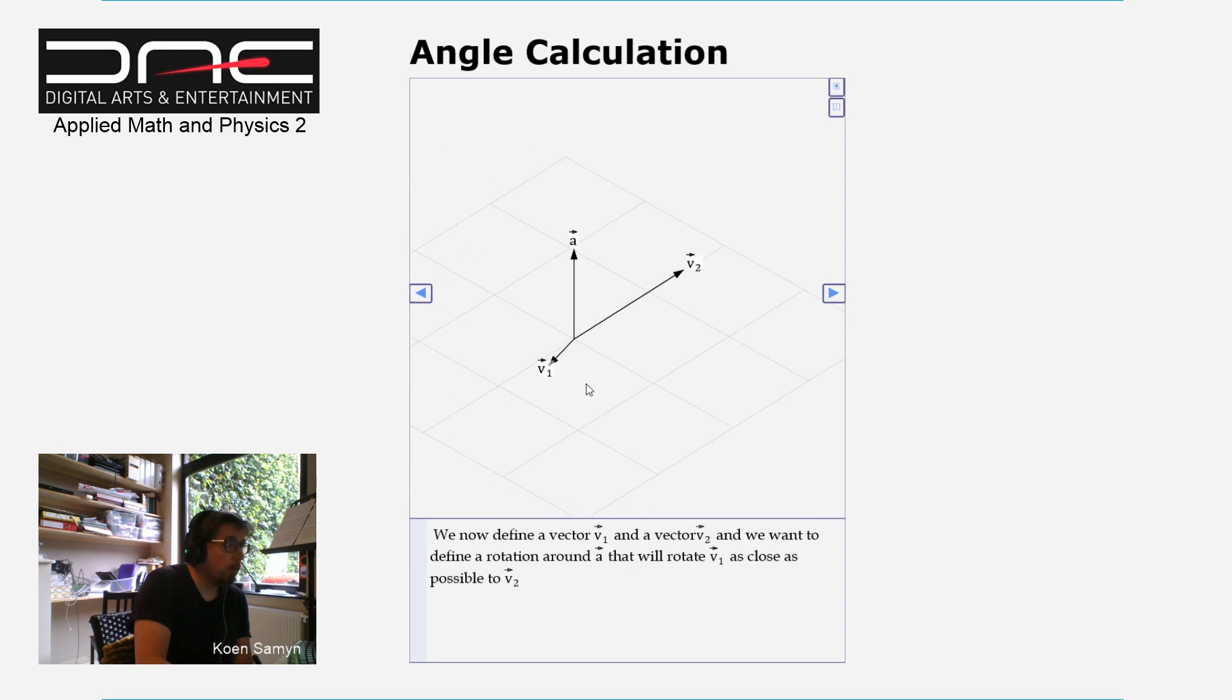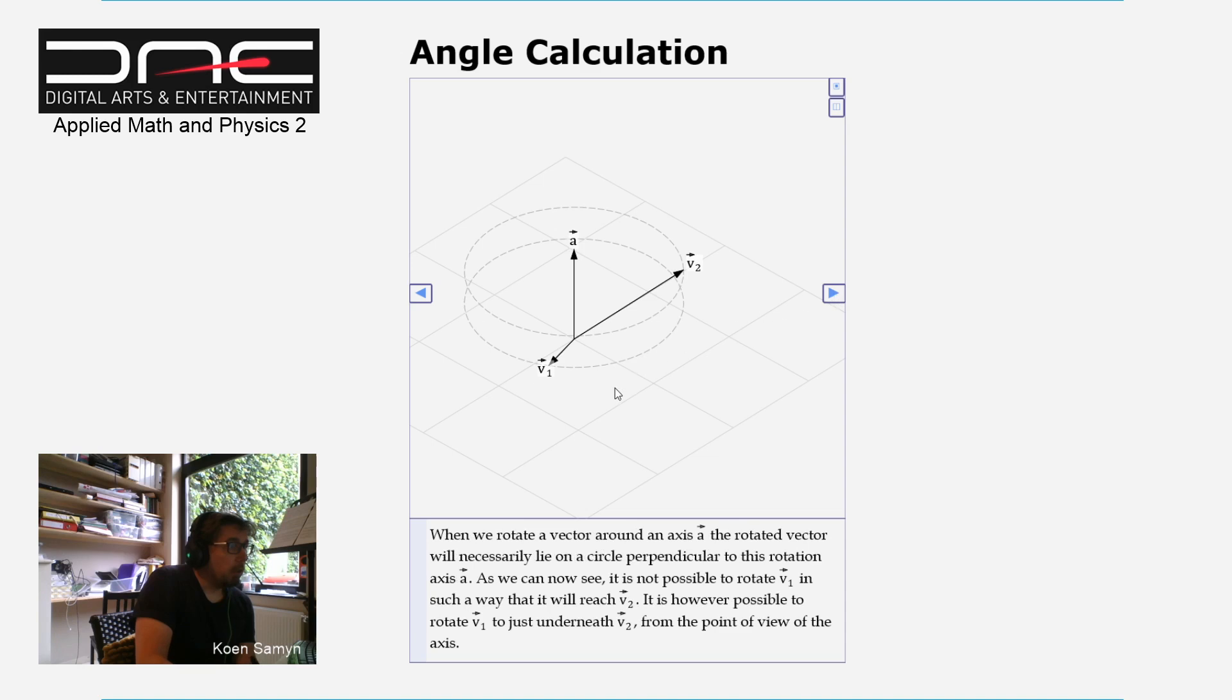Where we want to rotate something towards a target given that we only have one degree of freedom. The first important thing to realize is that this will not always be exactly possible. In this situation, we see that we will never be able to use the rotation around axis A to reach V2, but we can get close.